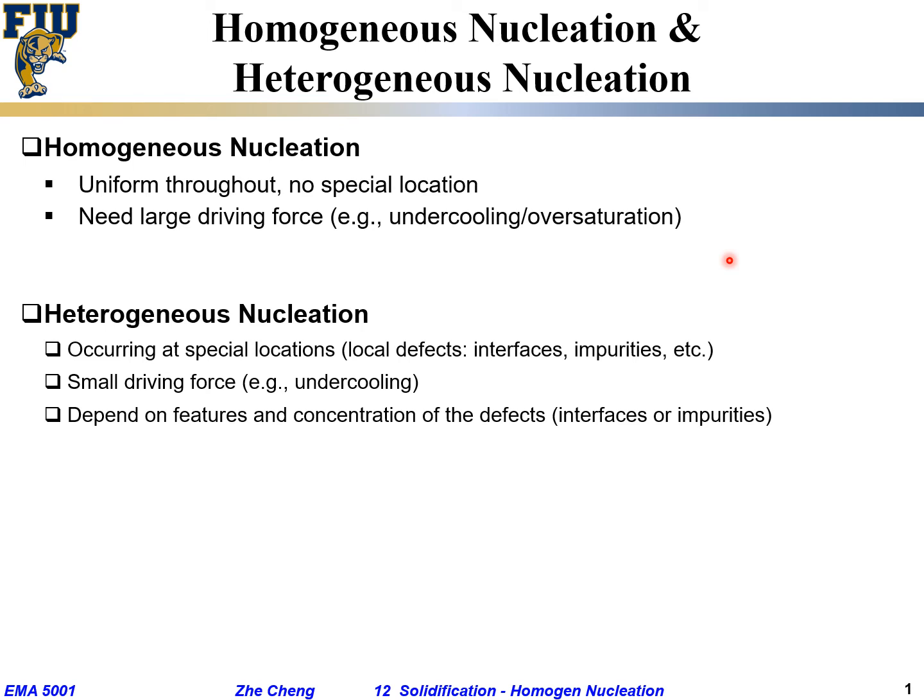And heterogeneous nucleation depends on special features and concentration of the defect. If it's going to happen at, let's say, grain boundary, the more the grain boundary, the faster it would occur, the more frequently it would occur. Make sense?